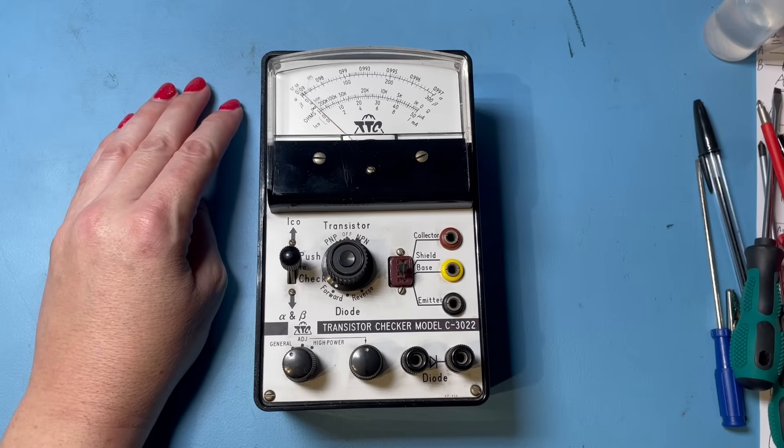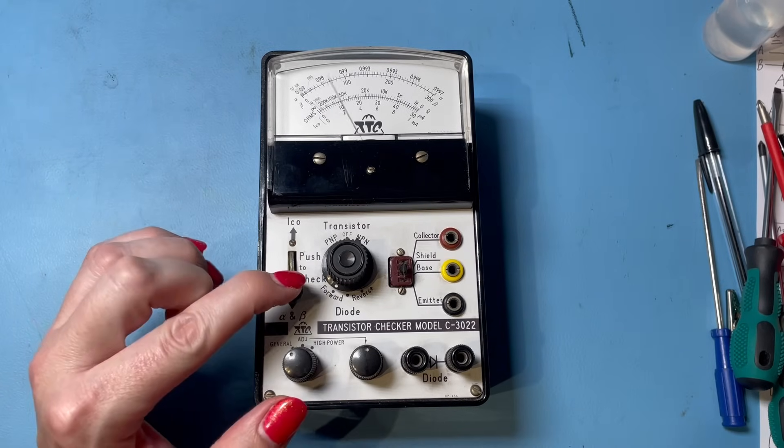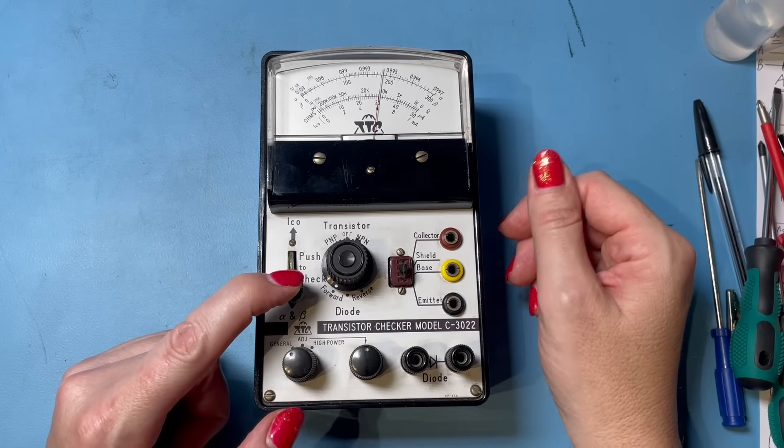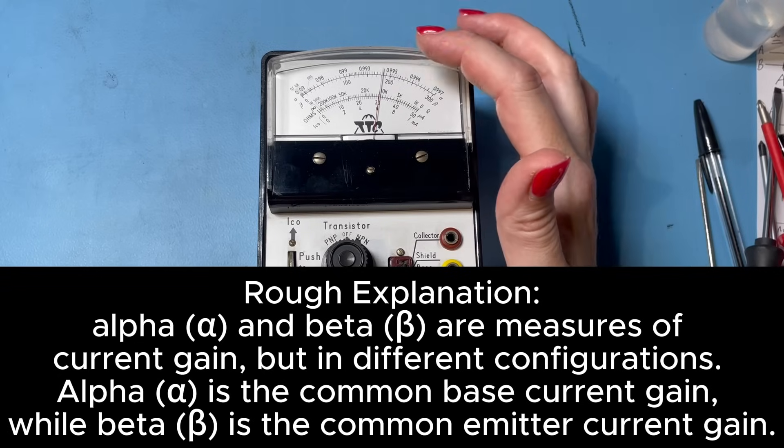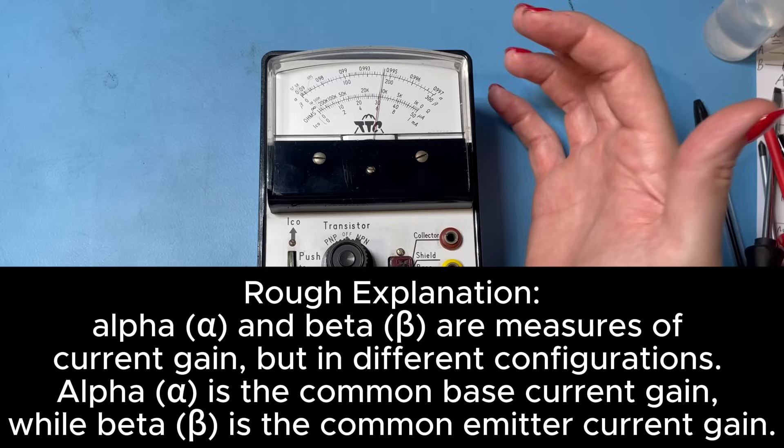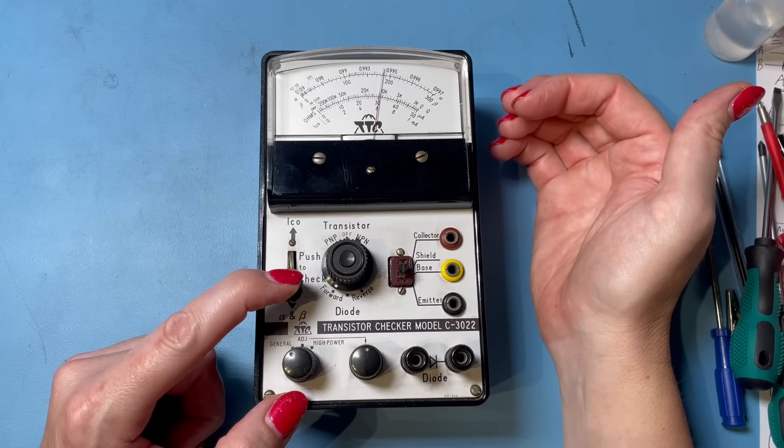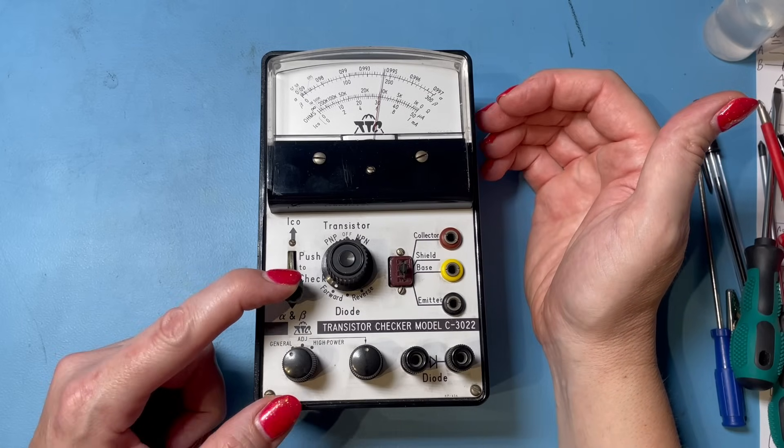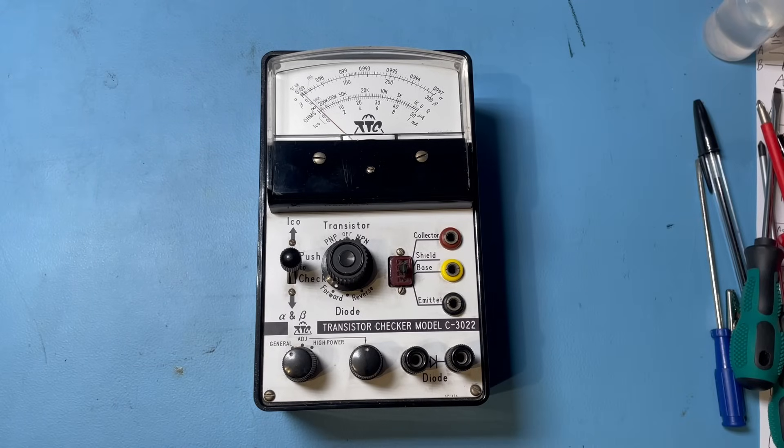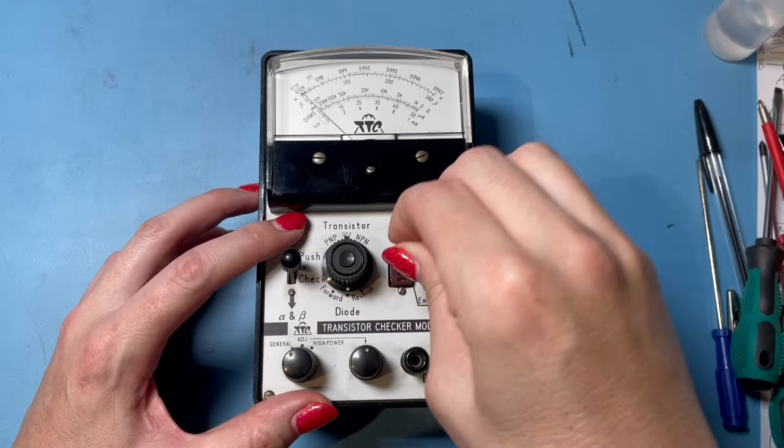I believe this to be a good transistor. Well, it's a brand new one. It's never been fitted. Push down to check your alpha and beta, which I think beta is now HFE, I believe. So alpha's reading at just below 0.995. The beta is reading at about 180. So from what I gather, that's a pretty good transistor. All right, so that's a silicon transistor, NPN.